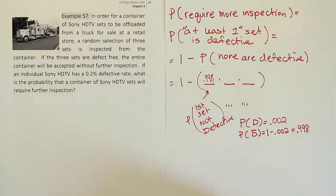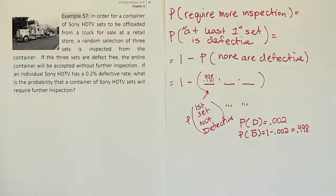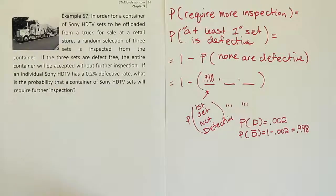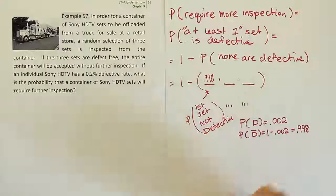if you're drawing less than 5% of the total population, you don't have to worry about independent versus dependent. So this truck has lots of TVs on it. It probably has at least 100 sets on it, and we're only looking at 3. So 3 out of 100 is less than the 5% threshold, which is required for us to need to use dependency when it is dependent.